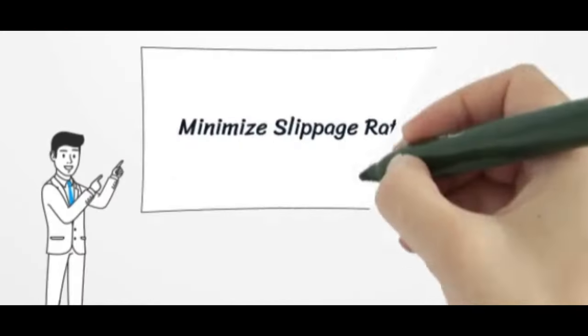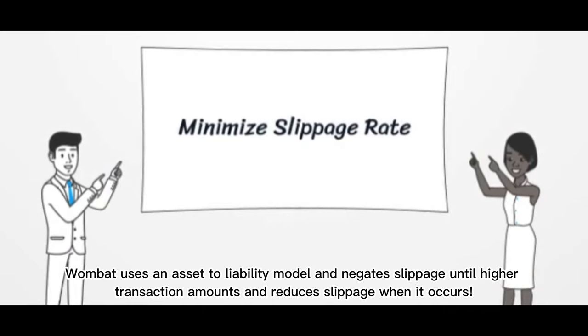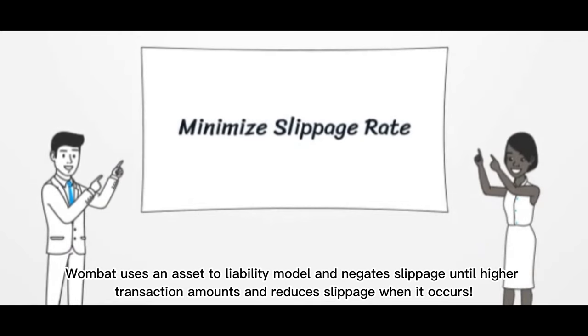Minimize Slippage Rate: Wombat uses an asset-to-liability model and negates slippage until higher transaction amounts, and reduces slippage when it occurs.